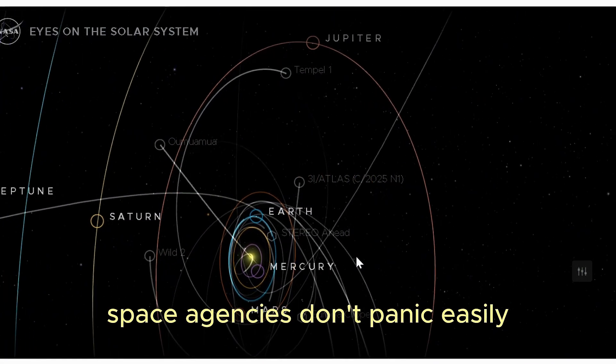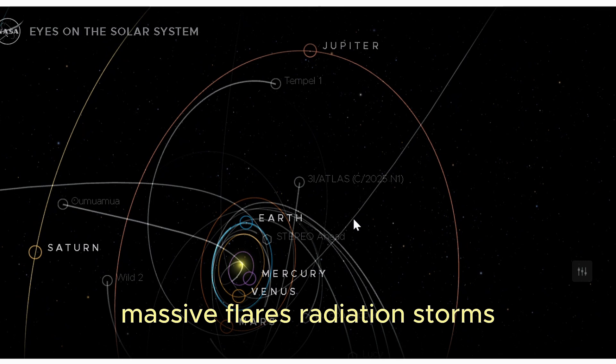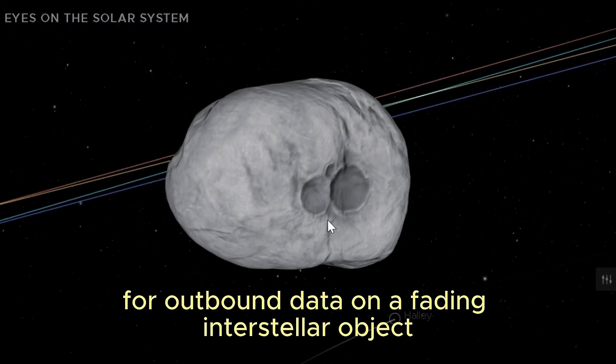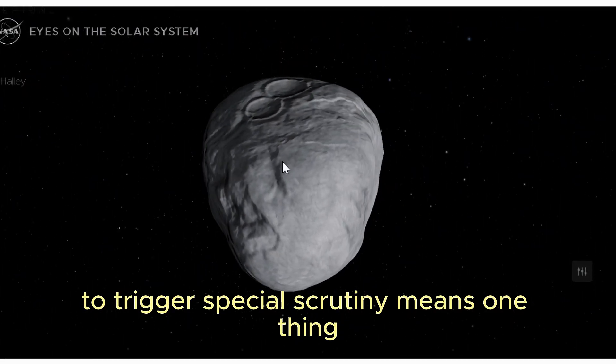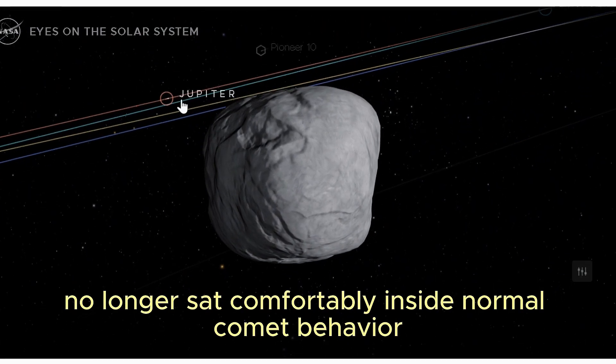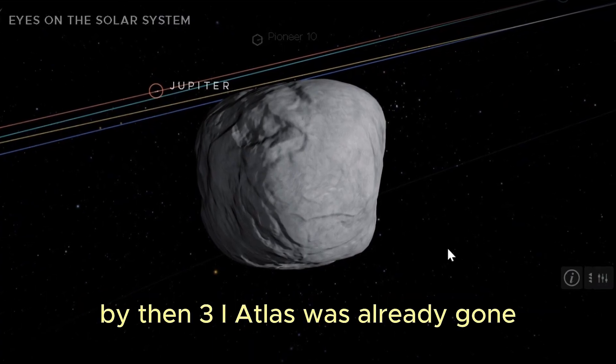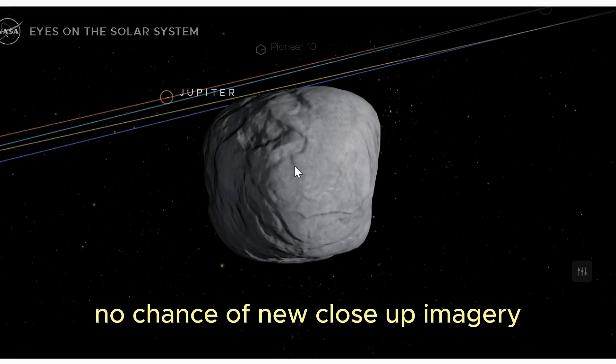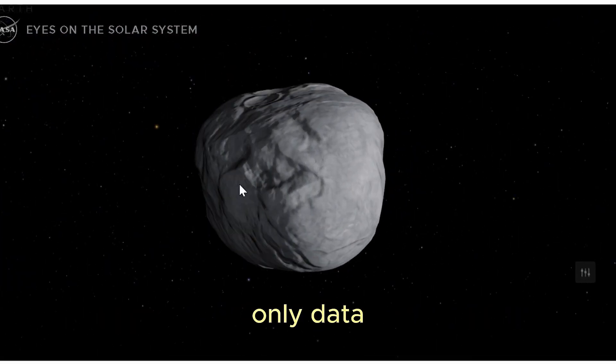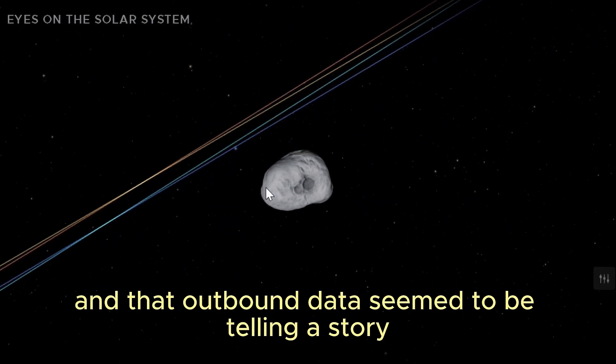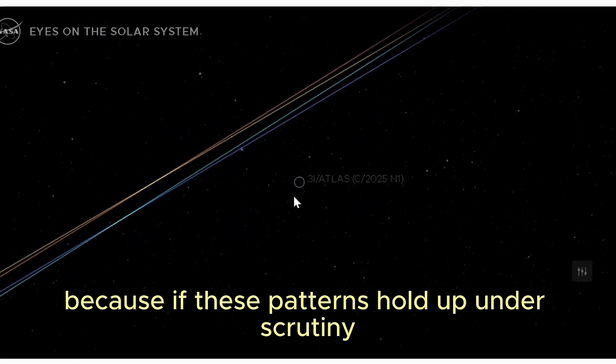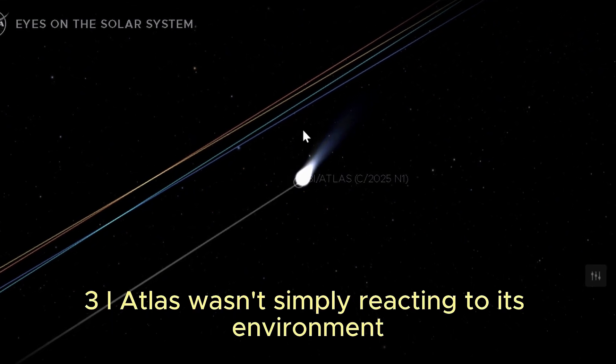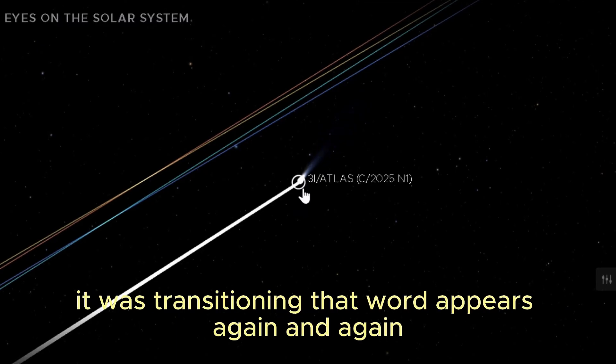Space agencies don't panic easily. They track near-Earth asteroids, massive flares, radiation storms. For outbound data on a fading interstellar object to trigger special scrutiny means one thing: what they were seeing no longer sat comfortably inside normal comet behavior. By then, 3I Atlas was already gone. No interception possible, no chance of new close-up imagery, only data. And that outbound data seemed to be telling a story nobody was eager to spell out in a press release, because if these patterns hold up under scrutiny, then 3I Atlas wasn't simply reacting to its environment. It was transitioning.